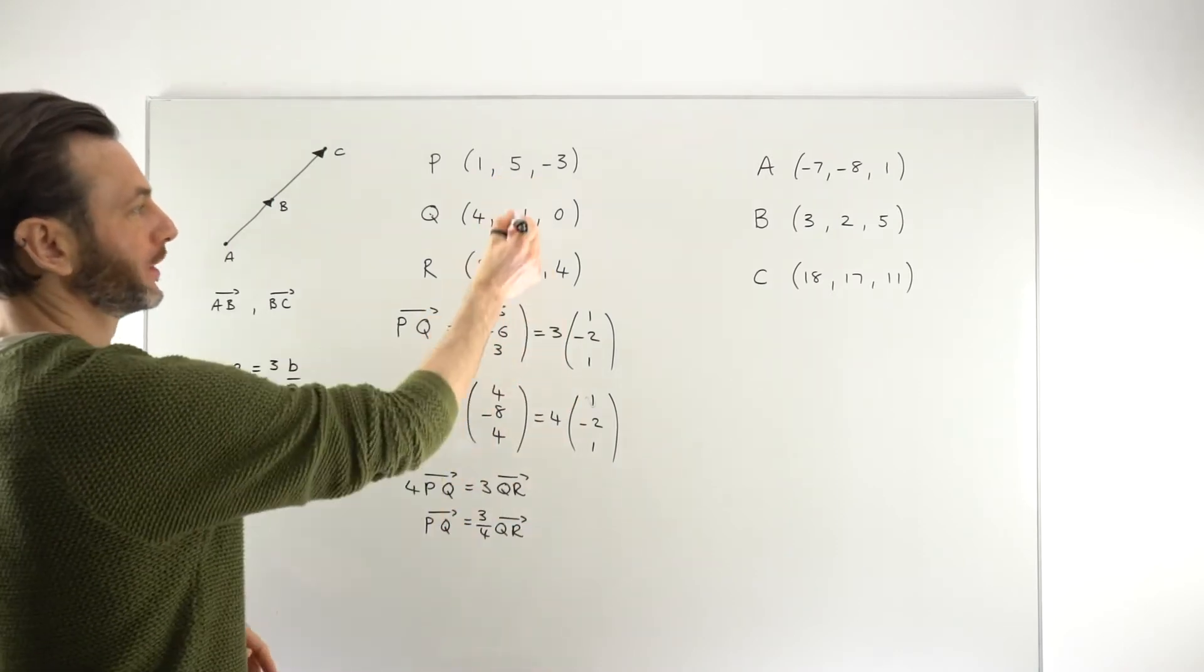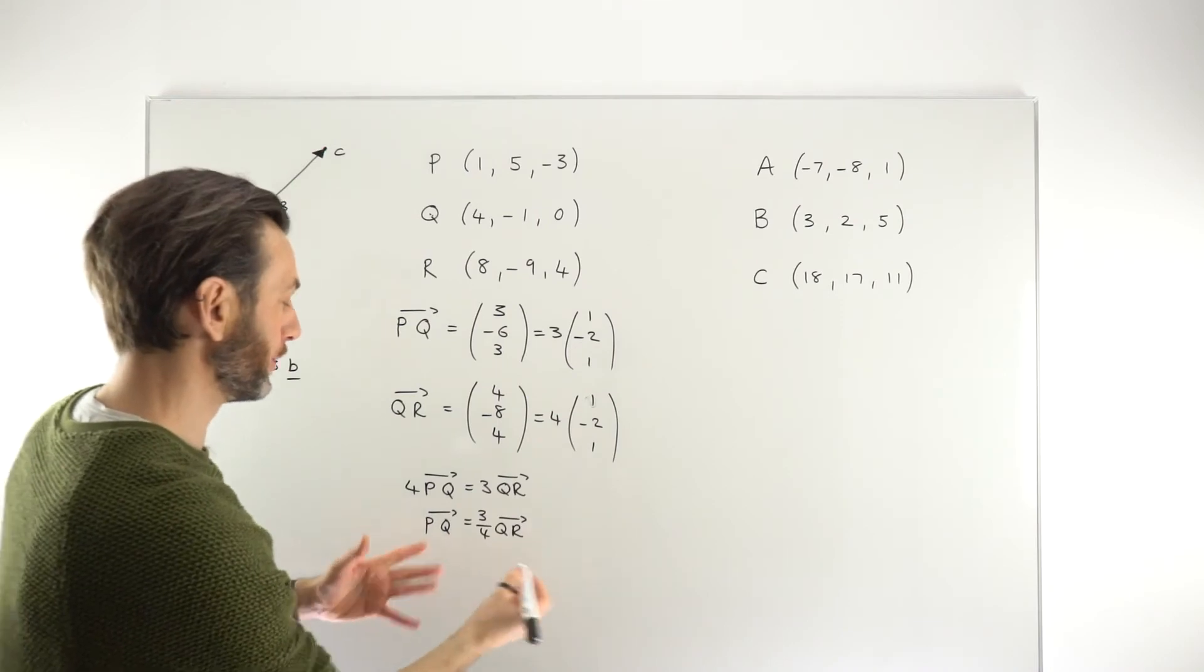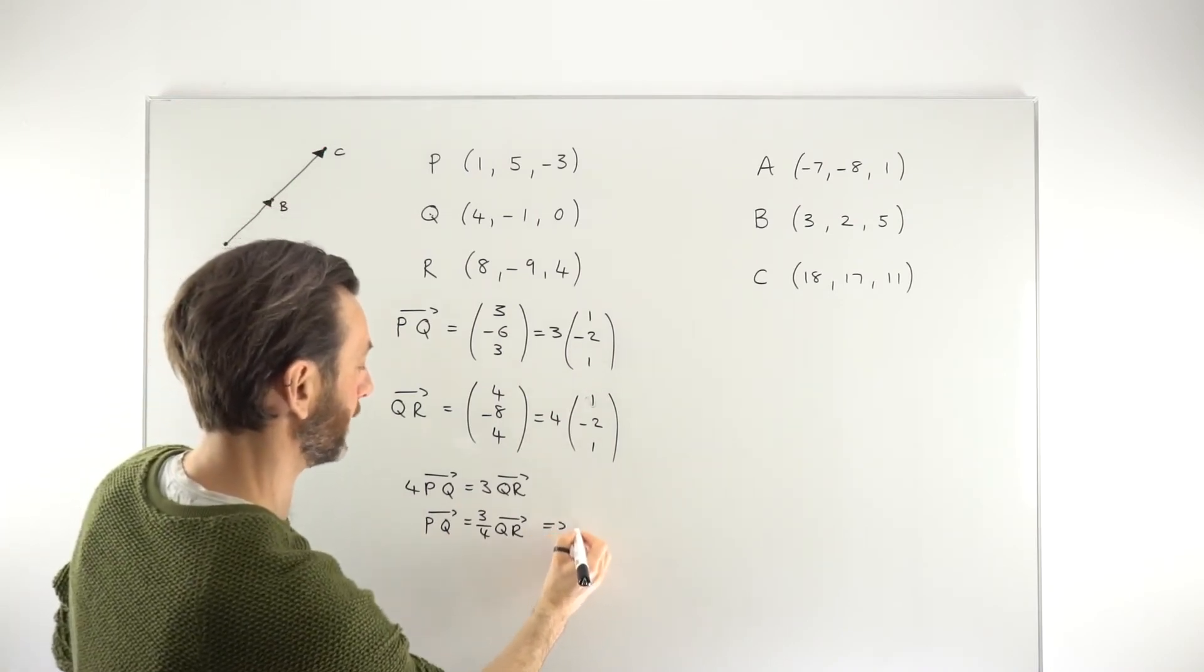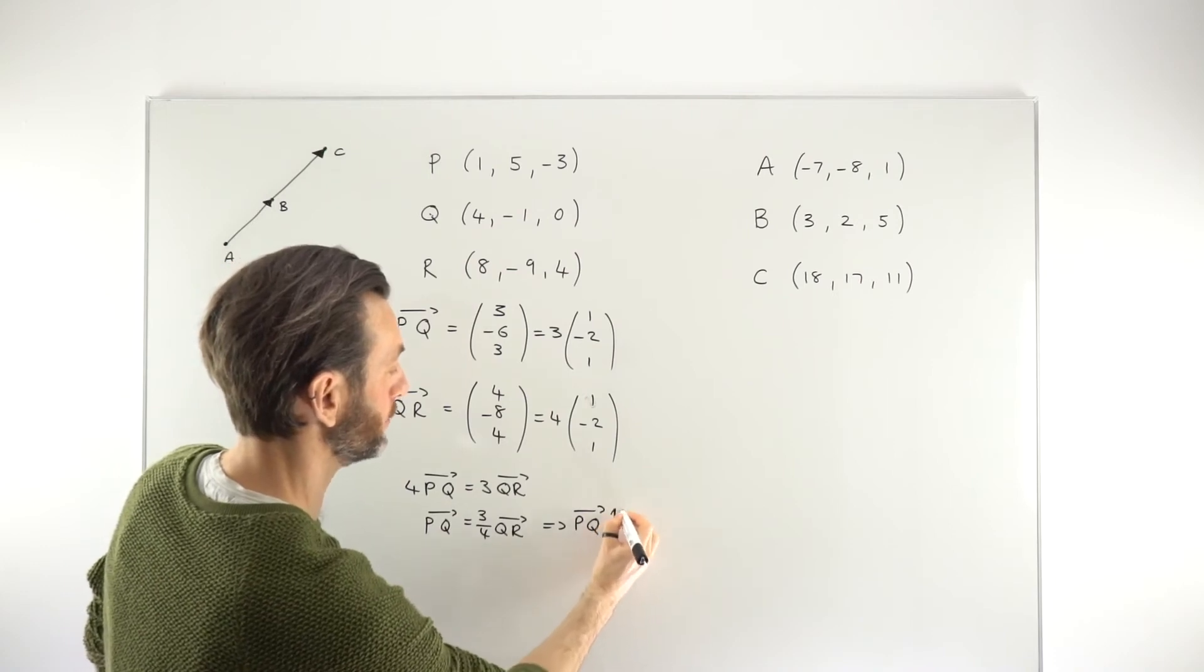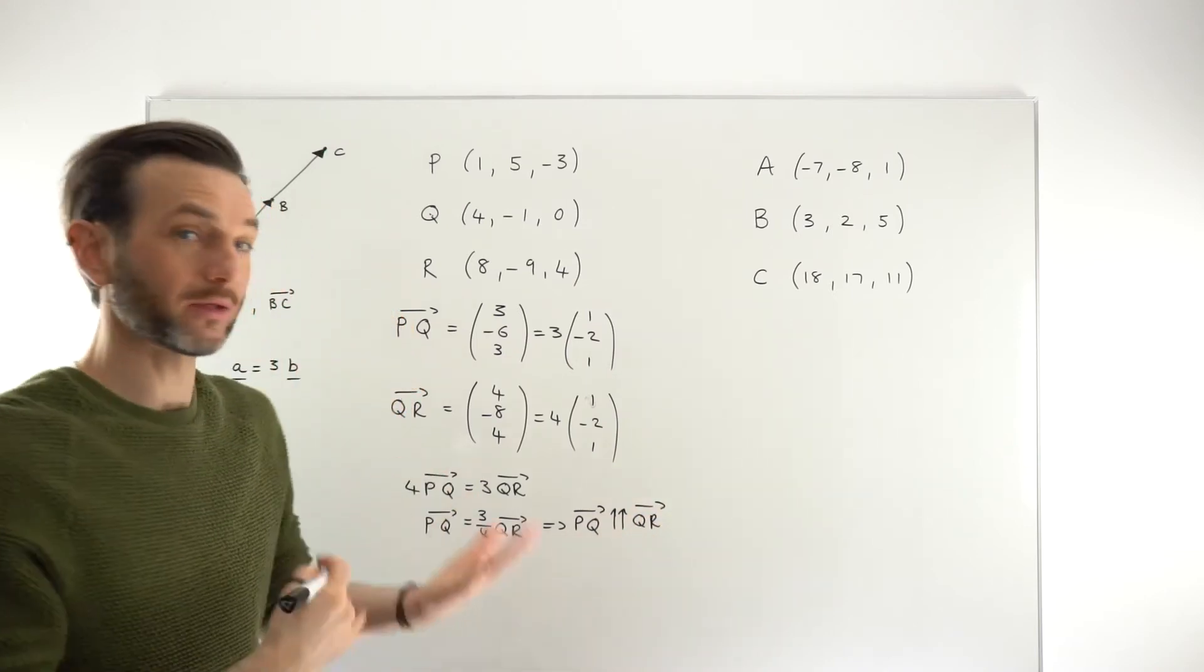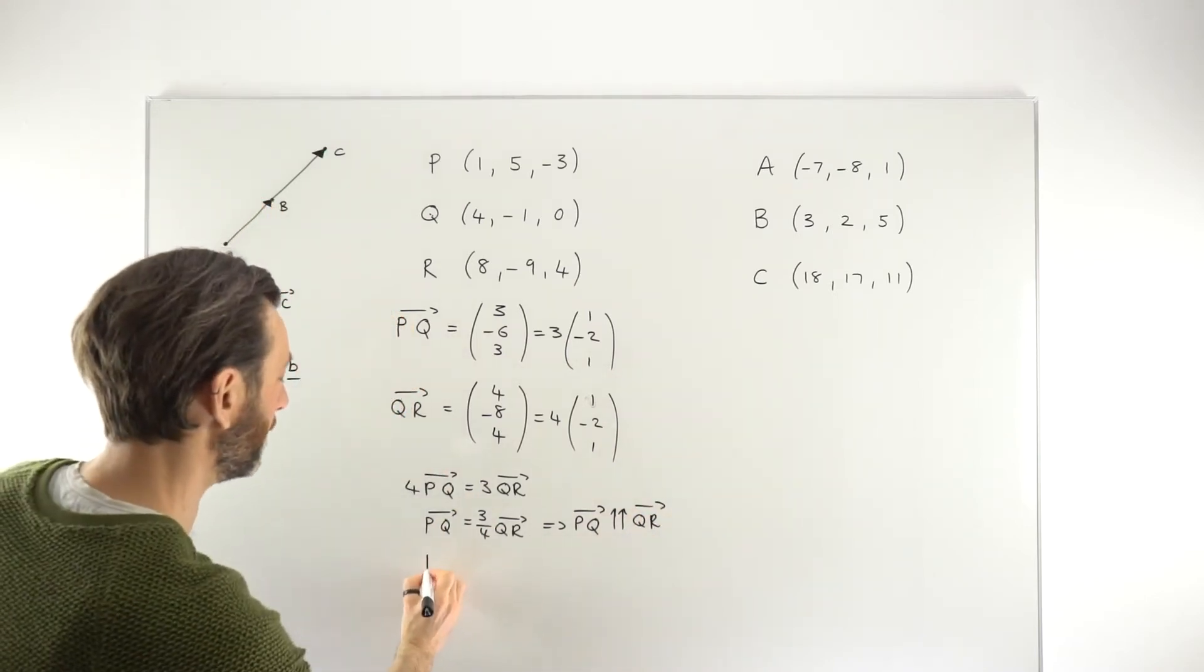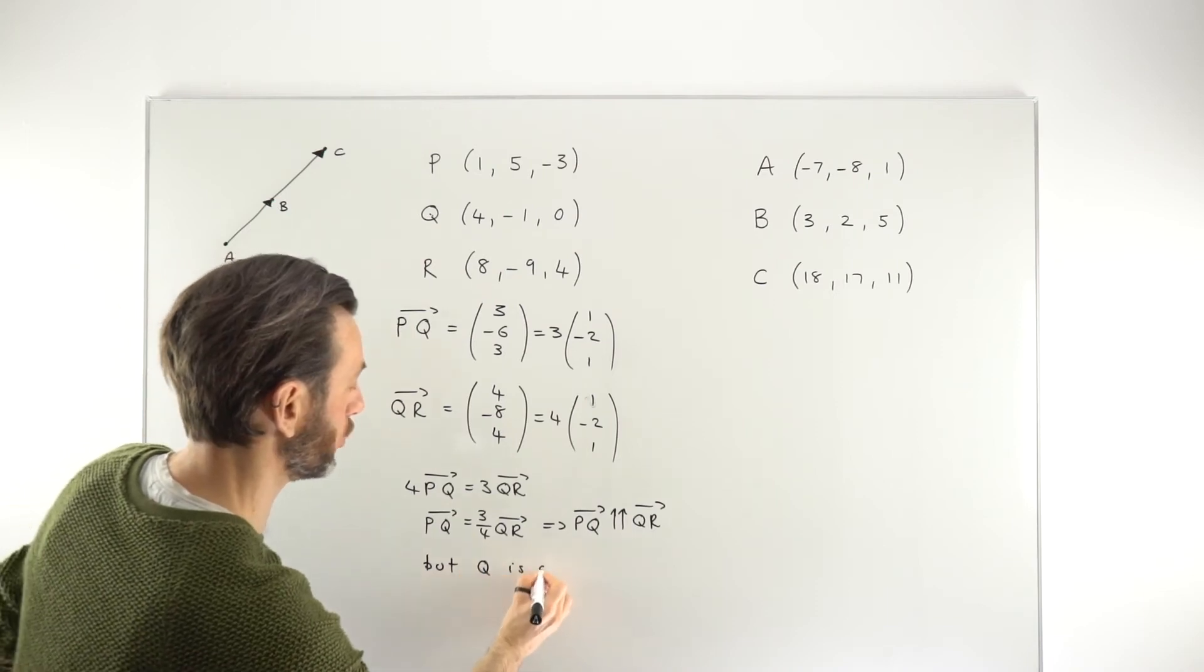Going back to the problem of showing that these are collinear, all we need to do now is to state. So if you state something like this implies that PQ is parallel to QR. And then you need to make a statement, something like, but Q is a common point.